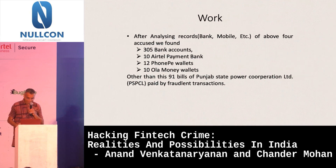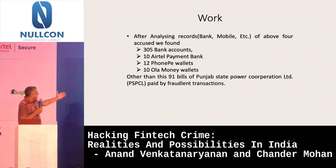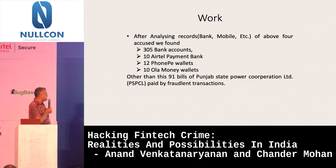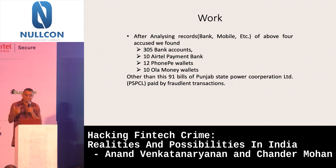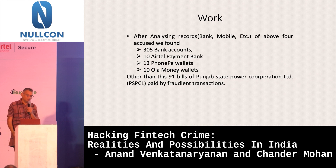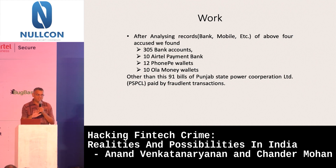This is a live FAR finding: 305 bank accounts, 2 people, 10 rental payment banks, 12 PhonePe wallets, 10 Ulamoney wallets, and 91 bills of Punjab State Power Corporation paid via fraudulent transactions. Money doesn't just go into bank accounts — it also goes into paying bills. This is what I call a bill discounting product: someone can't pay their electricity bill, a fraudster pays it and takes 15–20%. This is a well-entrenched, fully digital alternate economy.